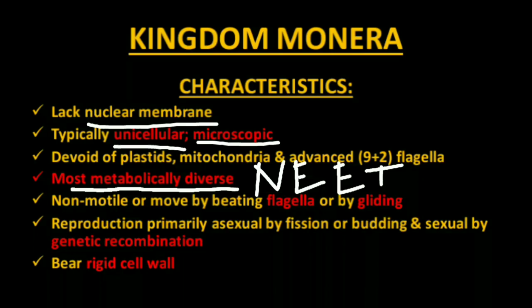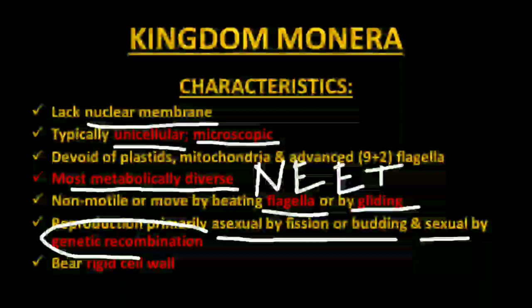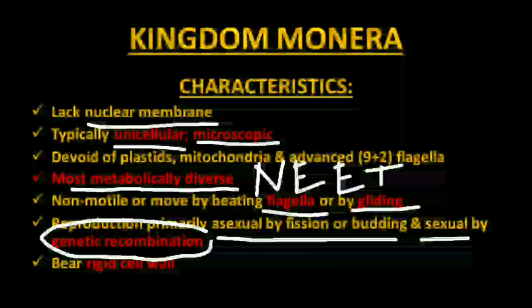They can be non-motile or they can move by beating flagella, so flagella are their main locomotory organ. If a bacterium does not have flagella, it can still move by gliding movement. Reproduction is primarily asexual by fission or budding. Although they are unicellular prokaryotes, sexual reproduction can occur, but it is not classical sexual reproduction — it is a kind of genetic recombination only. They bear a rigid cell wall, and what kind of cell wall is present in what kind of prokaryote will be discussed shortly.